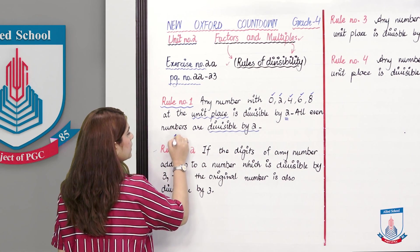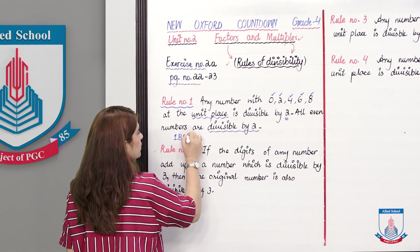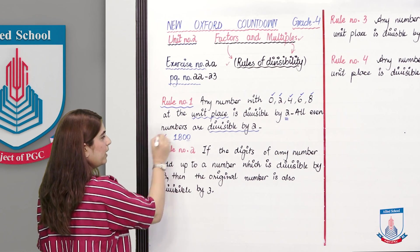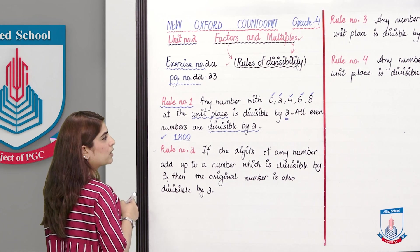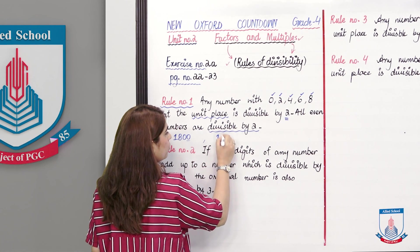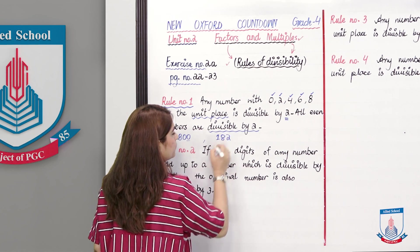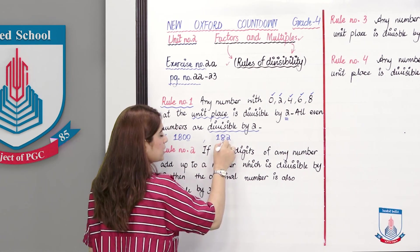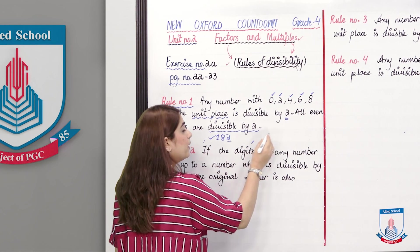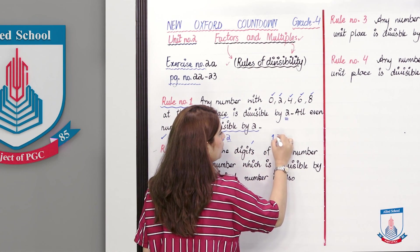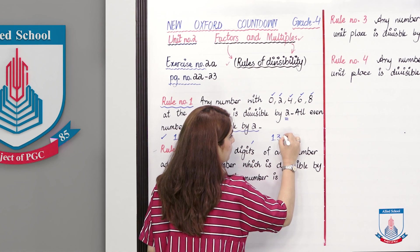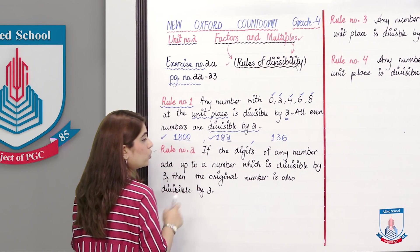For example, if I have the number 1,800 — the unit digit is 0, so this is divisible by 2. If I write the number 182 — the unit digit is 2, so this is also divisible by 2. If I write 1,306 — this number is also divisible by 2.